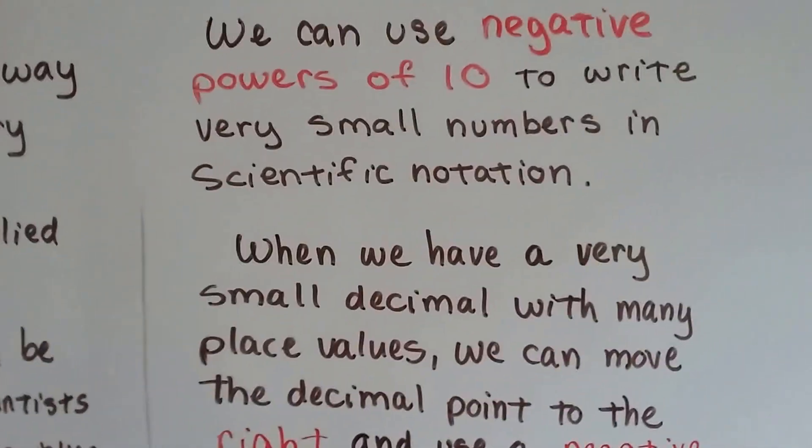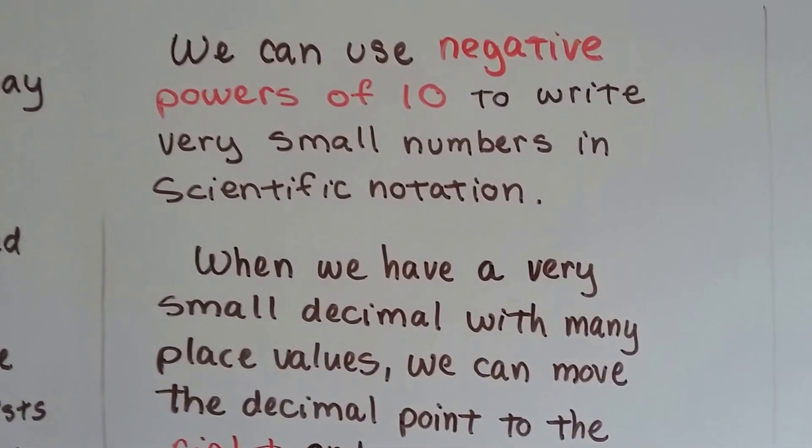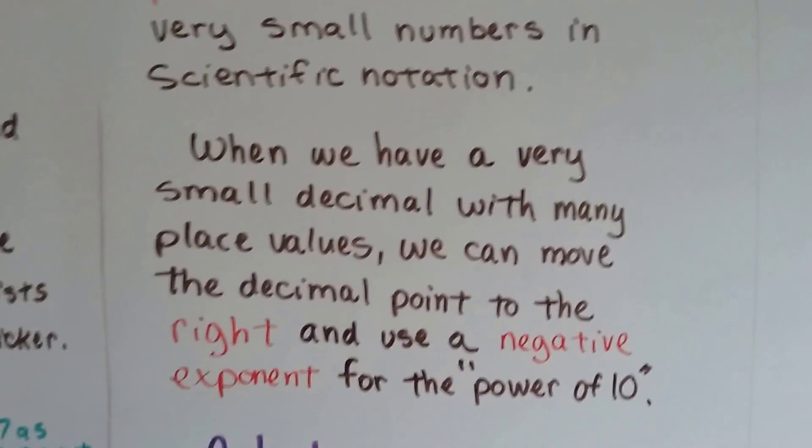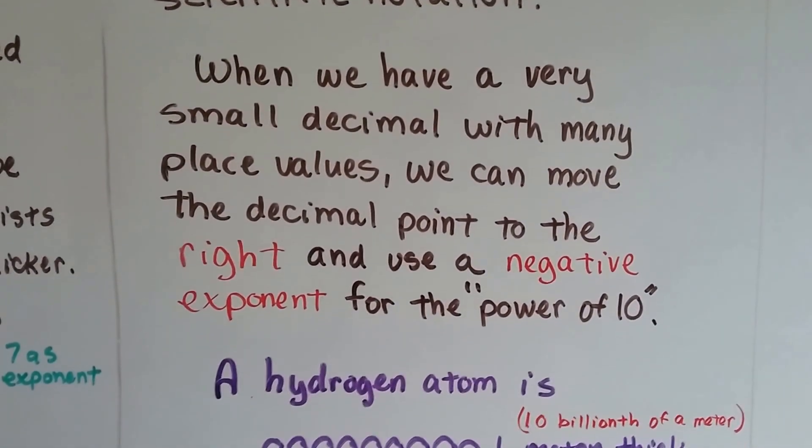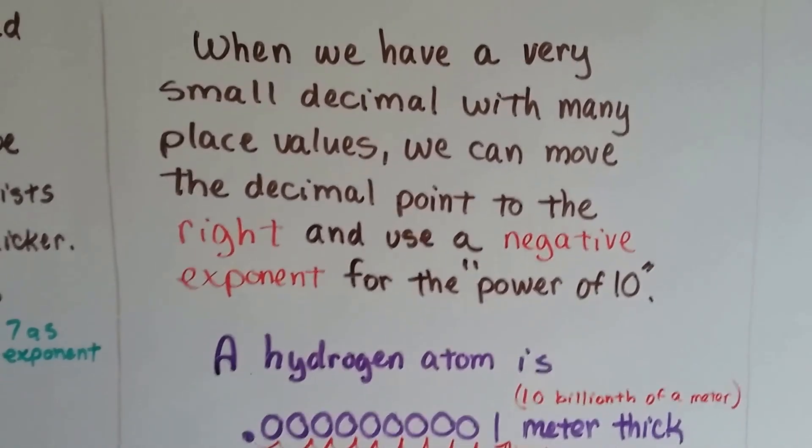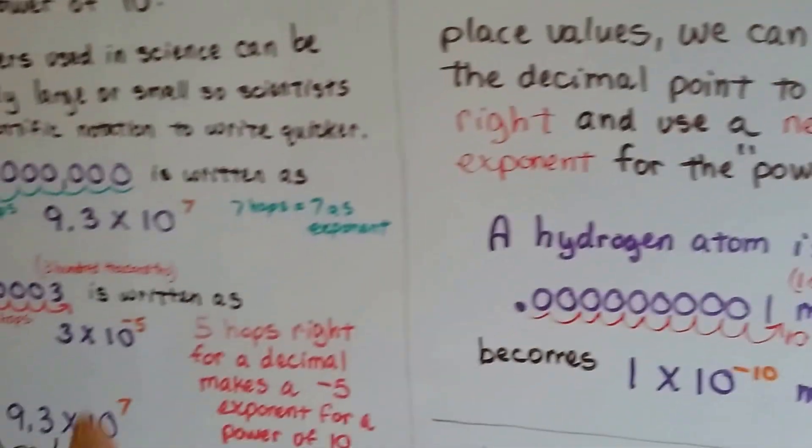We can use negative powers of 10 to write very small numbers in scientific notation. When we have a very small decimal with many place values, we can move the decimal point to the right and use a negative exponent for the power of 10, just like we did over here.